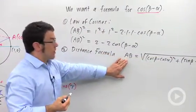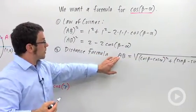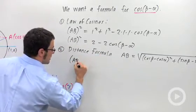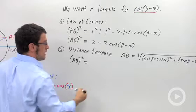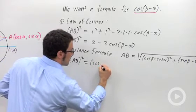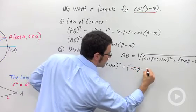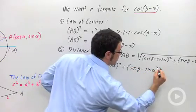Now I'm actually interested in the square of this, because eventually I'm going to equate what I get with this. So I want AB squared equals, and then I'm going to have cosine of beta minus cosine alpha squared plus sine beta minus sine alpha squared.